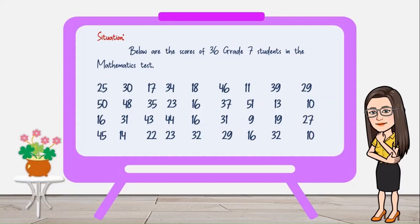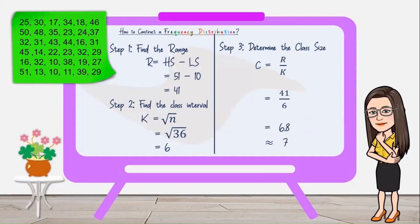How to construct a frequency distribution? For instance, below are the scores of 36 grade 7 students in mathematics tests. We will construct a frequency distribution out of this given data. To construct a frequency distribution, we need to follow some steps.